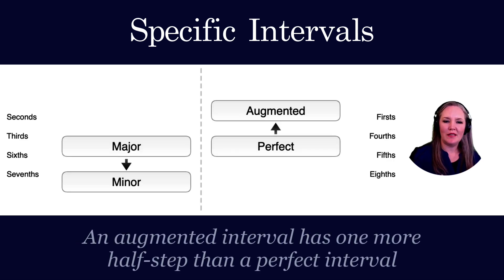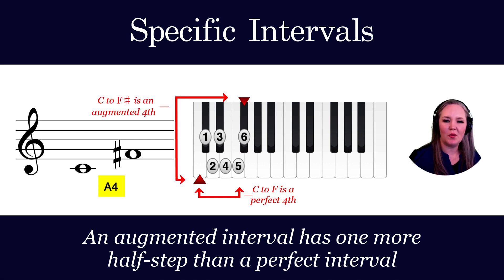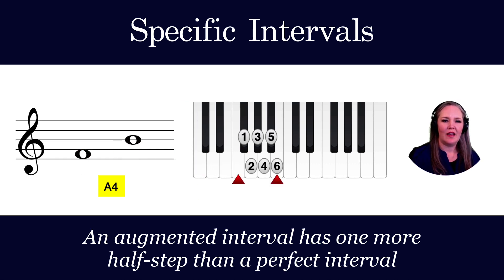An augmented interval has one more half step than a perfect interval. Since C to F is a perfect fourth — five half steps — C to F-sharp would be an augmented fourth, which is six half steps. F to B is also an augmented fourth, since F to B-flat is a perfect fourth.